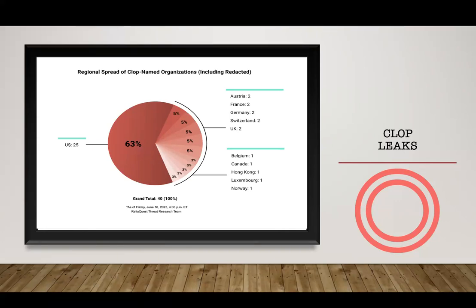CLOP continues ramping up naming GoAnywhere victims — in March alone they named an additional 95 organizations, claiming to have hacked 91 and naming 52 in a single day. According to Shodan, over 2,500 MOVEit transfer instances were vulnerable to the exploit — more than double the 1,000 exposed GoAnywhere instances. We hope companies have applied lessons learned from the GoAnywhere MFT compromise to minimize the extent of MOVEit damage.